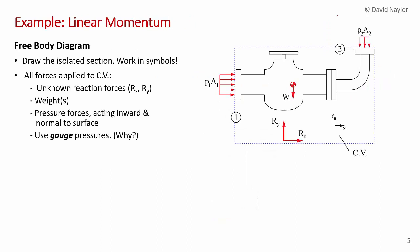To solve this problem, start by drawing a free body diagram — the valve and piping system isolated in space with all forces applied. Work in symbolic form, don't put numbers on this diagram. Place all unknown forces on the control volume, including the unknown reaction forces Rx and Ry.